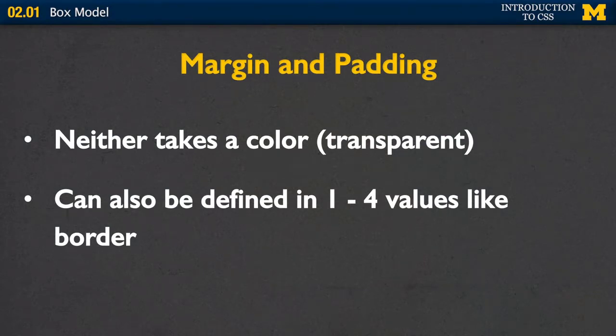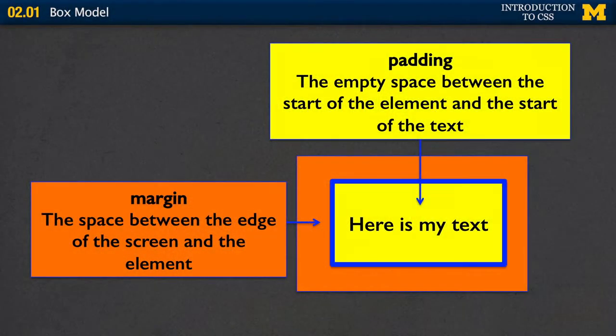Just like border, margin and padding can be defined with one to four values. So margin of three pixels gives a three-pixel margin around everything. Padding of ten pixels and five pixels sets top/bottom and left/right. In this picture: the text is the actual element, the blue is the border, yellow is the padding between the text and border, and the orange is the margin — telling the browser to keep space around the element.